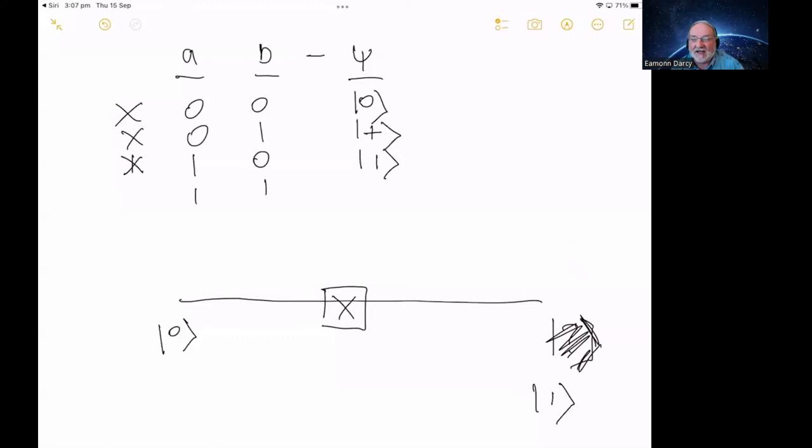And if we have a look at the fourth case, Alice gets a one. Therefore, she flips her qubit to a one. But then on the second classical bit, she gets a one. So she has to apply a Hadamard gate to the one. And that gives a state of minus. So here are the four states that we send to Bob.